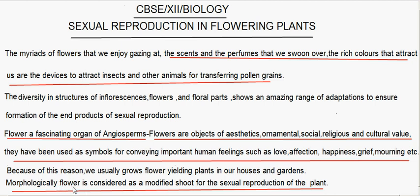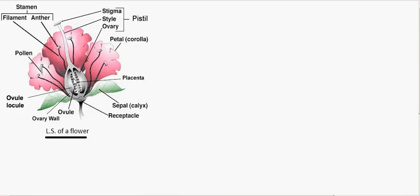Morphologically, a flower is considered as a modified shoot for the sexual reproduction of the plant. The flower consists of four whorls. The outermost whorl is the calyx, which is made up of sepals. The next whorl is the corolla, which is made up of petals.